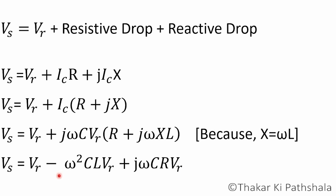Note that one term becomes negative because the two j's multiply together and become j². In mathematics, j is the unit imaginary number — in electrical engineering we use j instead of i to avoid confusion with current i. The value of j² is equal to −1.